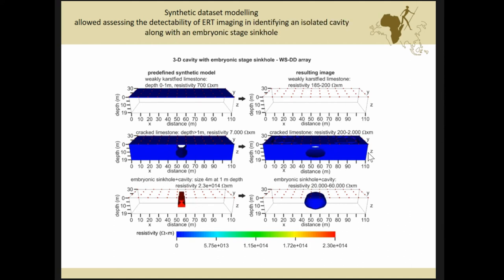The third example is that so-called embryonic stage sinkhole. What does it mean? It is a cavity with a partially collapsed roof that is not able to reach the surface. It's not a skylight. How are we able to detect the cavity and its partially collapsed roof? No. We are able to detect this kind of body, this very diffuse, concise body.